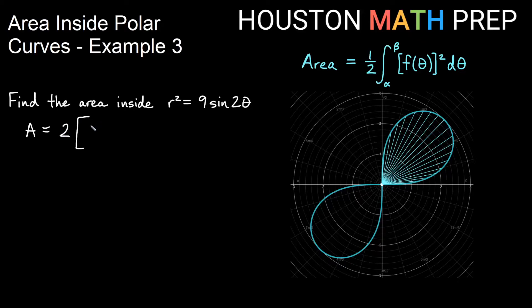So 2 times my formula: ½ integral from α to β of f(θ)² - in other words, this is r². Now what you may notice is I already have r². So actually what goes in my integral is just what is written here: 9sin(2θ).